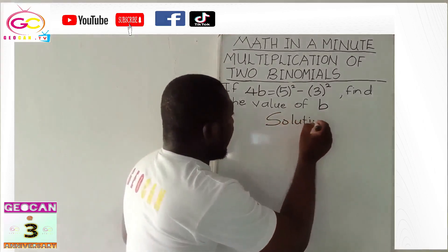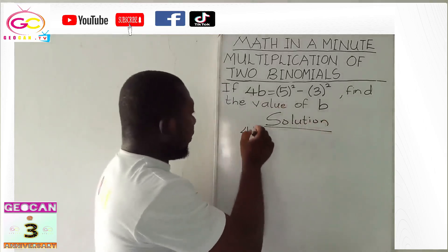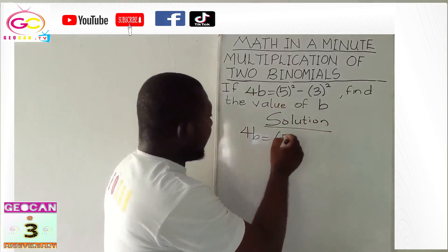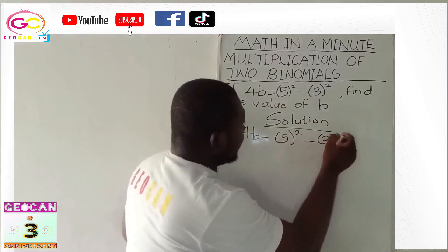Solution simply means how you solve it nicely written. Let's start the question again. 4b is equal to 5 raised to the power 2 minus 3 raised to the power 2.